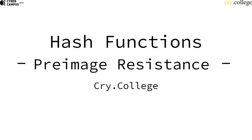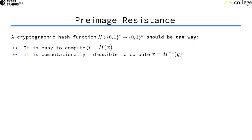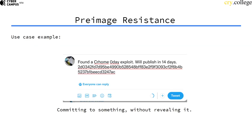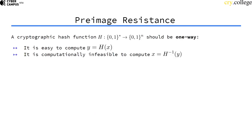The first security property a hash function should have is pre-image resistance. A hash function should be one-way: it should be easy to compute the hash value of a given input, but computationally infeasible to compute the inverse — that is, to reverse the hash and determine the input from just the hash value.